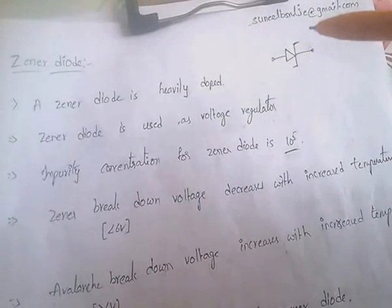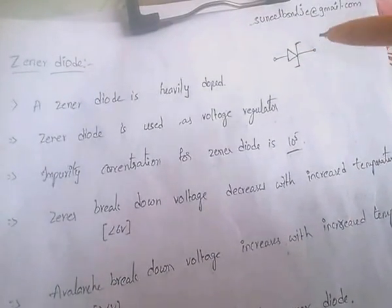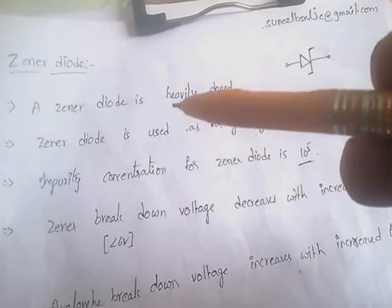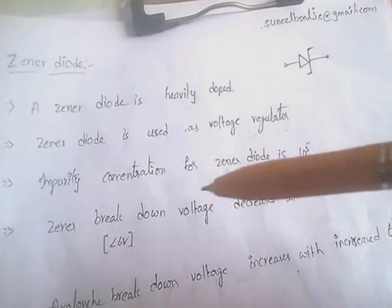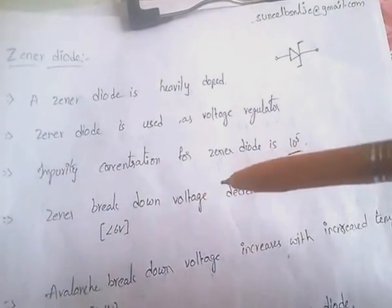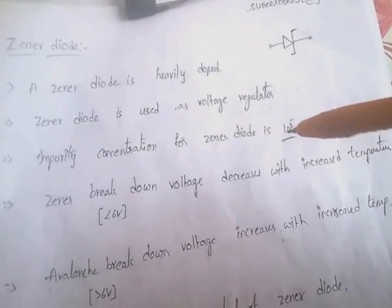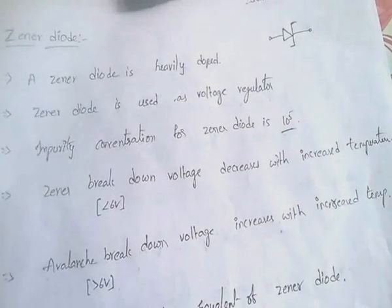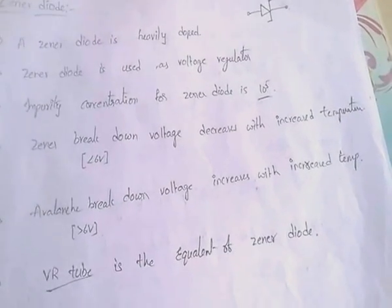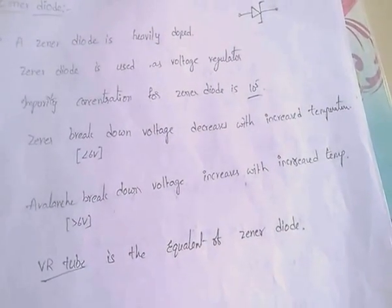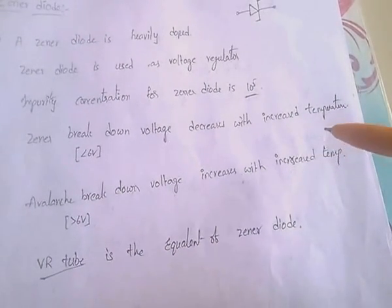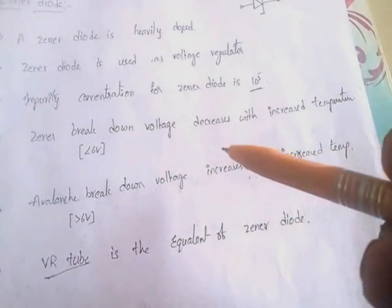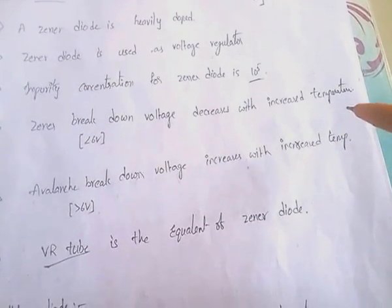The Zener diode is used as a voltage regulator. One important point: the impurity concentration for Zener diode is 10 to the power 5. The Zener breakdown voltage decreases with increase in temperature.